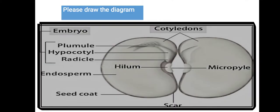Children, for today's lesson please draw a diagram showing the various parts of a seed — the structure of a bean seed.